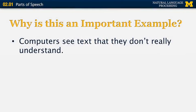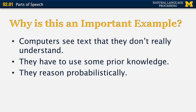Computers see text they don't really understand — a sequence of words — and if they lack prior knowledge about that language or those words, they can't understand anything. What they do is use prior knowledge or reason probabilistically. For example, there may be a rule that says: after 'the,' the next word is a noun with a probability of 99%, or after an adjective, the next word is a noun with a probability of 80%. Combining all these probabilities gives the best estimate consistent with known rules.